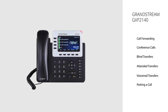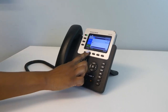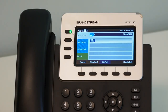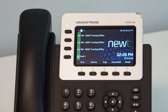Blind transfer. A blind transfer will allow you to transfer an existing call to another internal extension or external telephone number, providing the name and number of the caller being transferred. During an active call, using the soft key button below the screen, press the Transfer soft key. This will put your caller on hold and provide you with a dial tone. Dial the 3 or 4-digit extension number or the 10-digit telephone number, followed by the Blind Transfer soft key. The transfer is complete once the main screen on your handset returns to an active state.